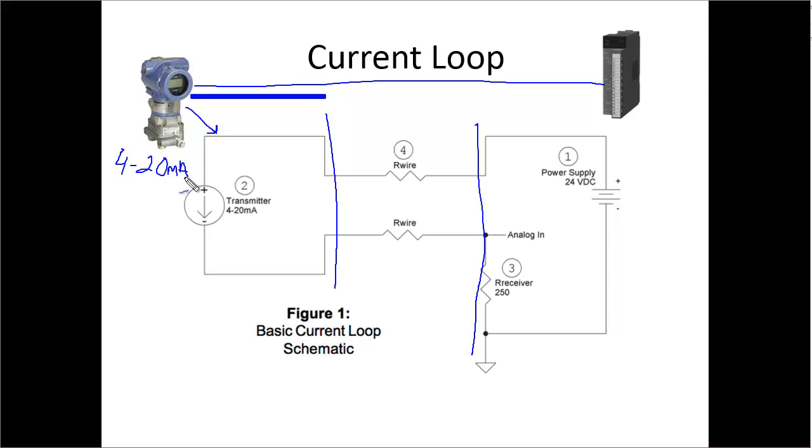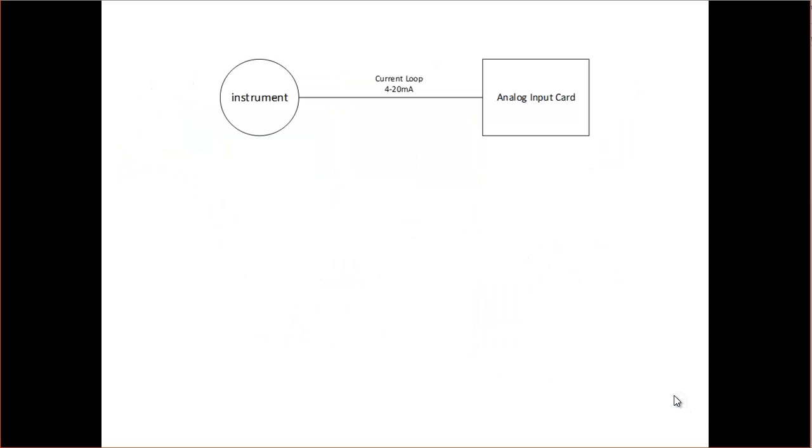It's going to be a 4 to 20 milliamp output signal that's going to travel through the wire here and go into the analog input card which is going to convert that current into a little voltage that's going to go down to our A to D converter. So an end to end example, let's just talk about the math that's going on behind here.